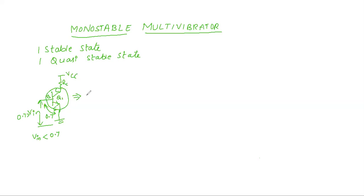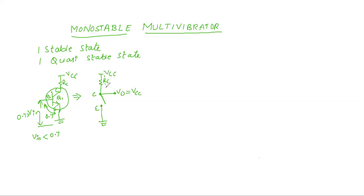Then the transistor will be like this — the equivalent circuit will have the collector terminal connected to VCC through a collector resistor, and the emitter terminal grounded. When V input is less than 0.7 volts, the transistor Q1 will not conduct, the collector and emitter terminals will be open, and the total VCC will appear across the output.